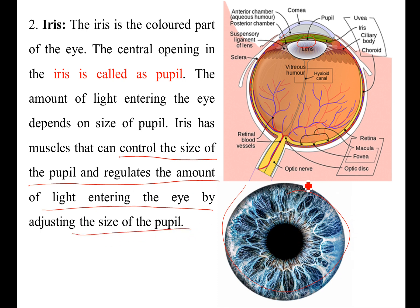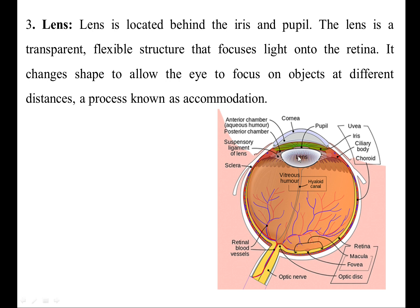The iris adjusts its muscles to control the size of the pupil and regulate the amount of light entering the eye. The lens is located behind the iris and pupil. It is a transparent, flexible structure that focuses light onto the retina and changes shape to allow focusing on objects at different distances, known as accommodation.